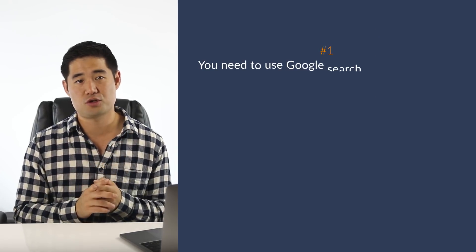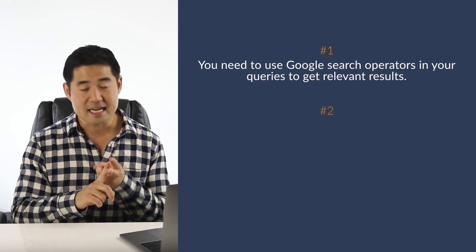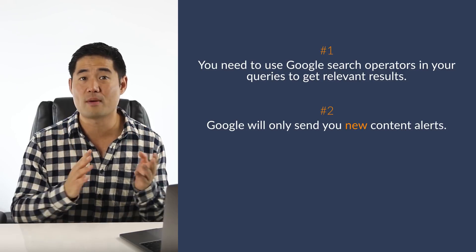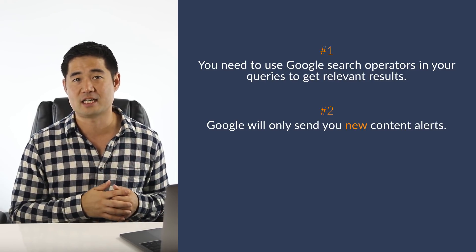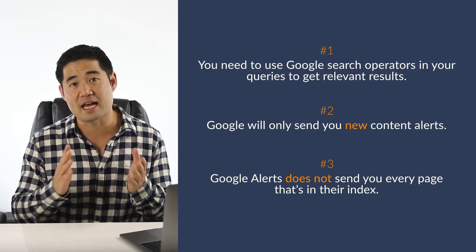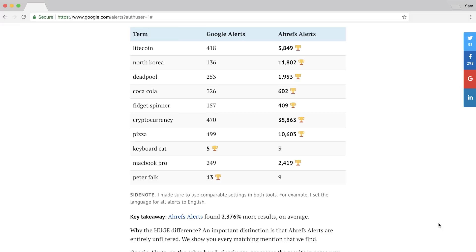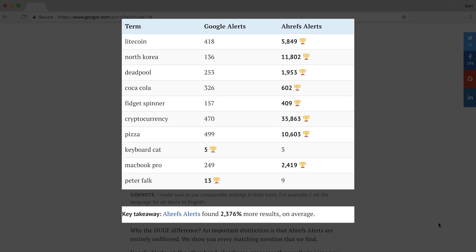There are three things you need to know about Google Alerts. First, if you don't use Google search operators, your inbox will likely get filled with a ton of irrelevant results. Second, Google doesn't send content that has already been published — only new content alerts. Third, Google Alerts does not send you every page in their index, meaning you'll miss out on a ton of perfectly good opportunities. In fact, we tested Ahrefs and found it produced 2,376% more results than Google for the exact same queries.